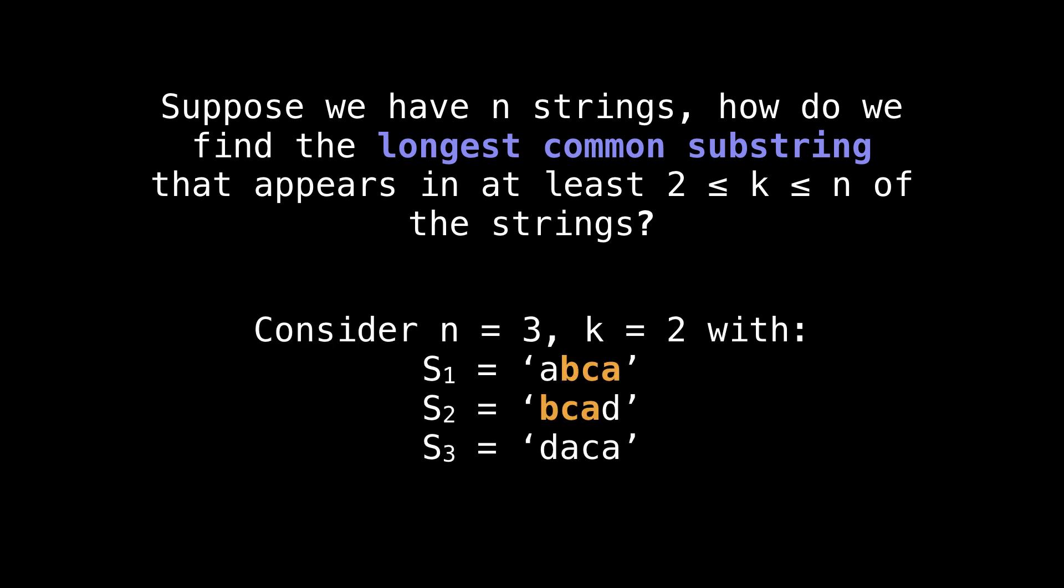As an example, consider the three strings s1, s2, and s3, with the value of k equal to two. Meaning that we want a minimum of two strings from our pool of three strings to share the longest common substring between them.